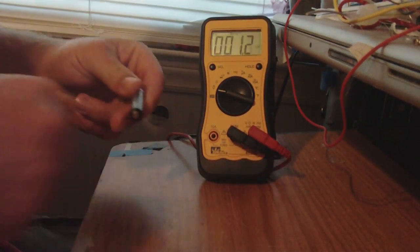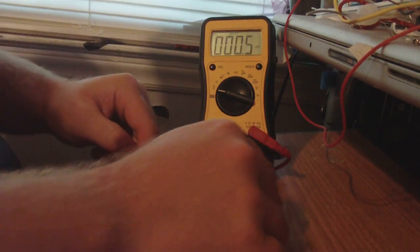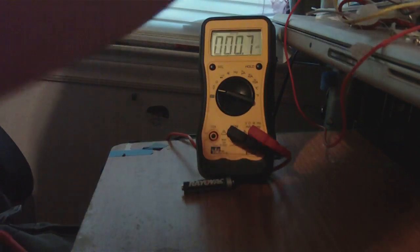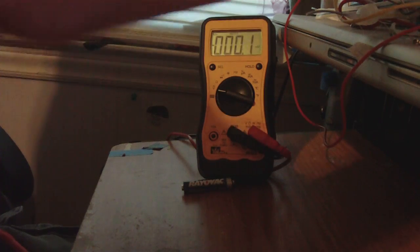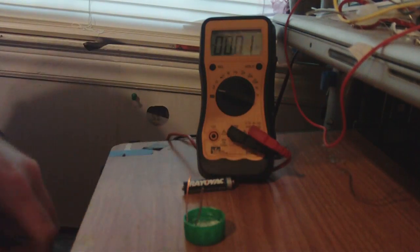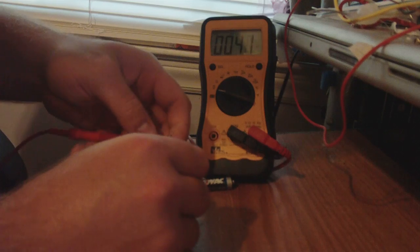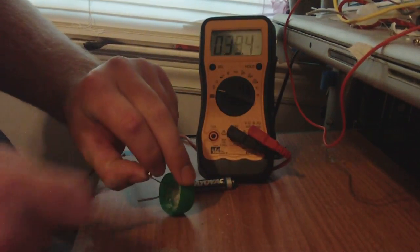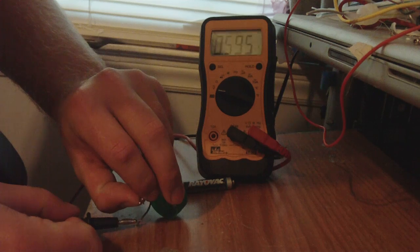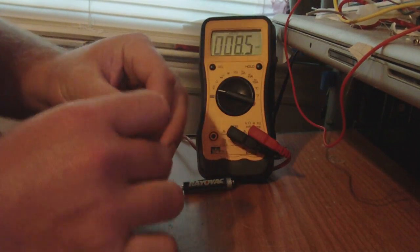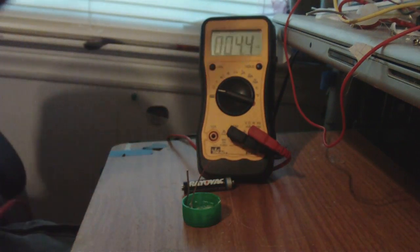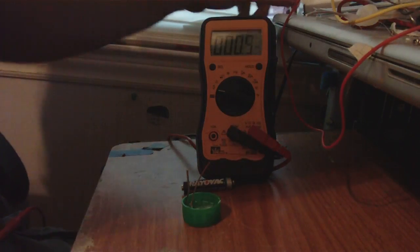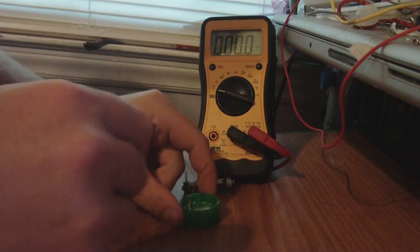Just remember that number. All right, let me grab one of these cells. I really don't know what this cell has in it. 0.593. All right, so we got about 1.601 in the battery.